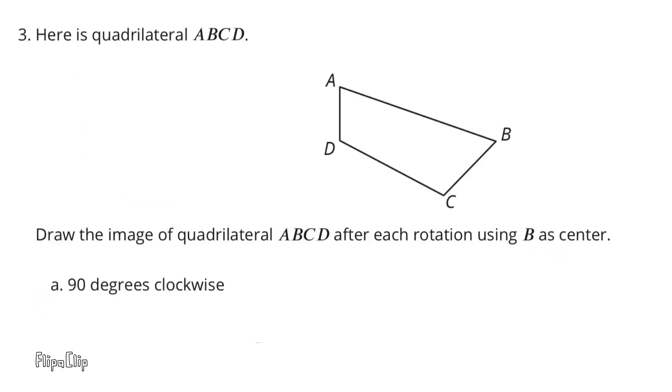Number 3. Here is quadrilateral ABCD. Draw the image of quadrilateral ABCD after each rotation using B as center. A. 90 degrees clockwise.